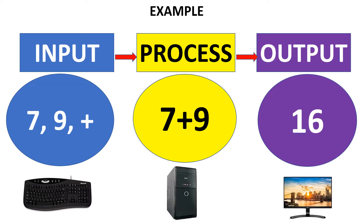Let us now understand how the computer works with an example. In this example, 7, 9, and plus are the input. Now the CPU processes this input and performs 7 plus 9. The result 16 is the output and it is displayed on the monitor.